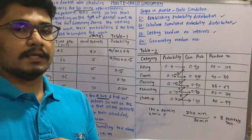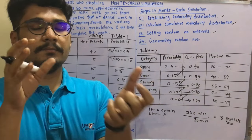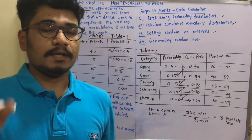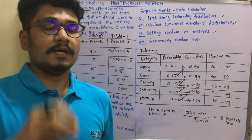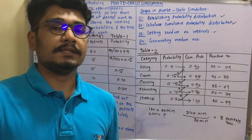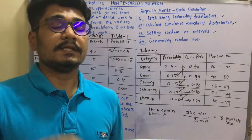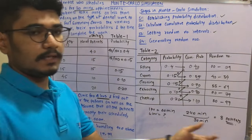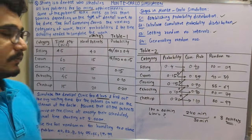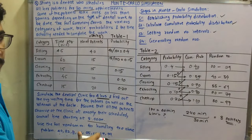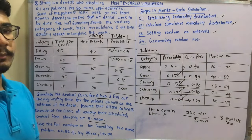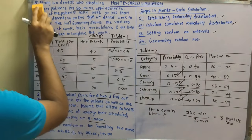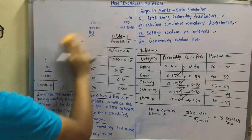Patient 1 arrives at 8:00 AM, Patient 2 at 8:30, Patient 3 at 9:00, Patient 4 at 9:30, Patient 5 at 10:00, Patient 6 at 10:30, Patient 7 at 11:00, and Patient 8 at 11:30. This gives us all 8 patients across the 4-hour simulation.